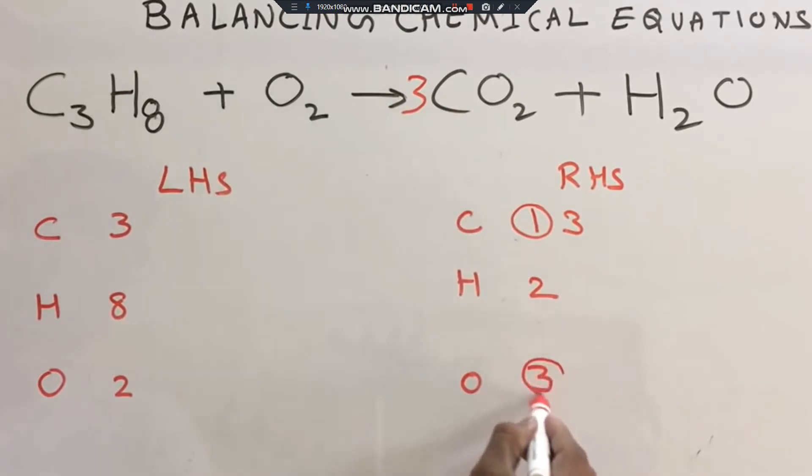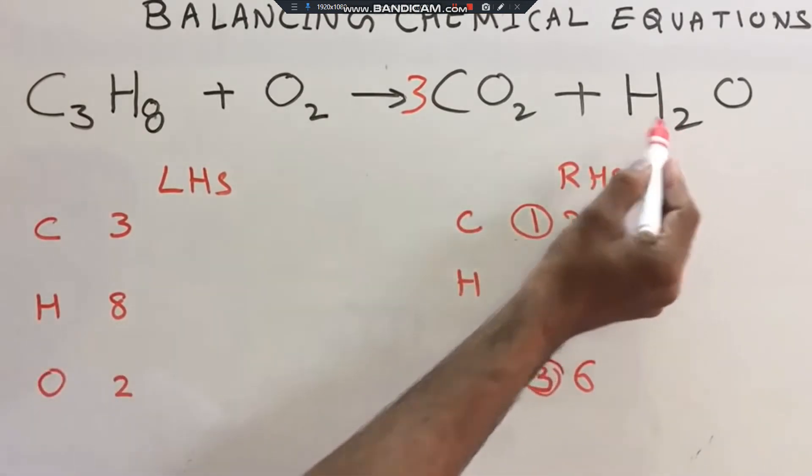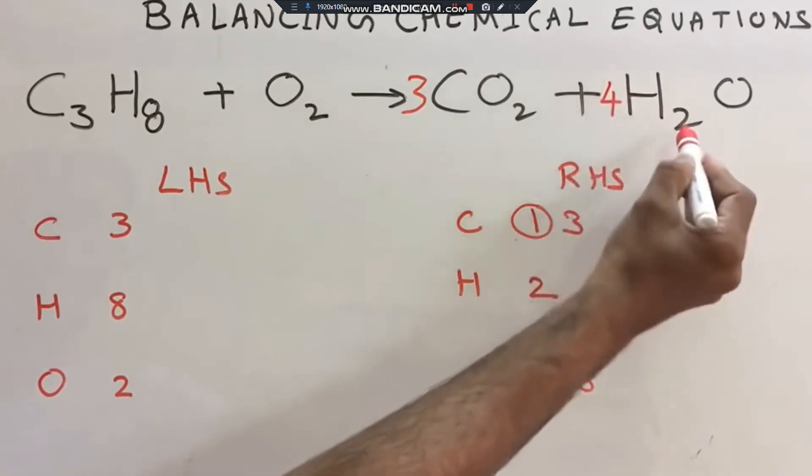Next, hydrogen. Hydrogen - how many hydrogens do we have? On the left we have hydrogen 8. So we need 4 H2O because 4 times 2 equals 8.